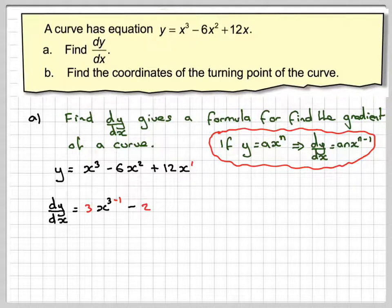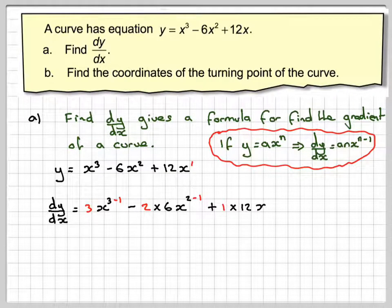We can bring down the 2. We've got minus 2. Keep the sign. Times 6x and reduce the power by 1. Bring down the 1. Times the 12x to the 1 minus 1. Reduce the power by 1.